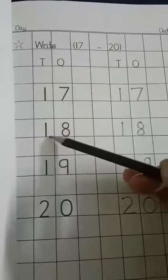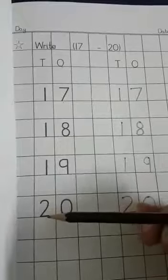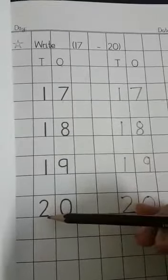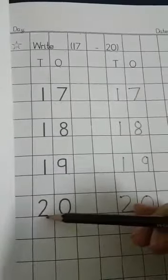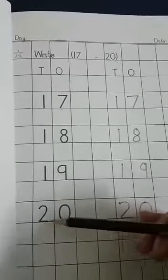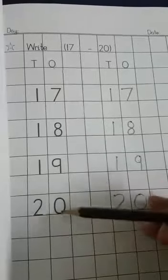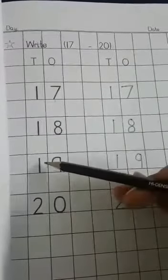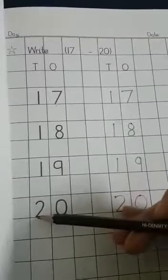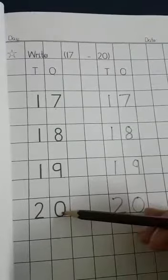Then we will write here 2 0 makes 20. 2 0 makes 20. What comes after 9? It's 0. And what comes after 1? It's 2. 2 and 0 makes 20.